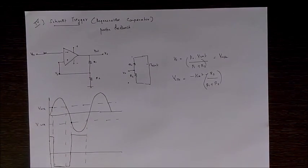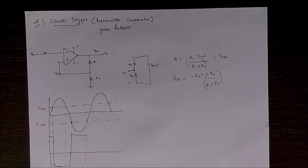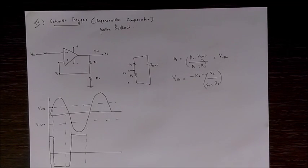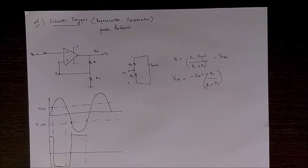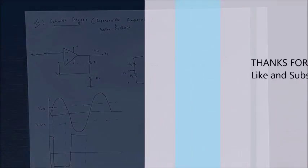So we have discussed all the main op-amp circuits. There are also circuits for wave generation such as square wave, triangular wave, and sawtooth waveforms, which will be covered in a future video. Please subscribe and like this video. Thank you.